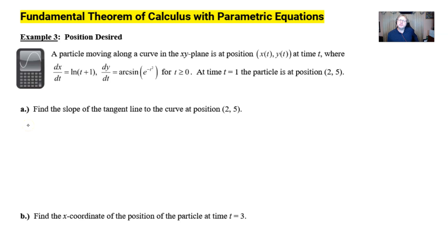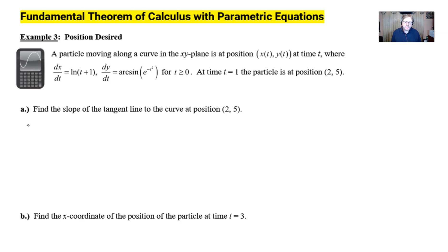It says we're going to use a calculator, so I'm going to do predominantly things that my students have seen before with the calculator, but you're welcome to follow along if you're fairly new to the TI-Nspire and want to practice. It says a particle is moving along a curve in the xy-plane at position x(t), y(t) at time t. We're given dx/dt = ln(t+1) and dy/dt = arcsin(e^(-t²)), with t ≥ 0. At time t=1 the particle is at position (2, 5). This is a very common stem you might see on a calculator-assisted velocity, acceleration, position, particle motion problem on the BC exam.